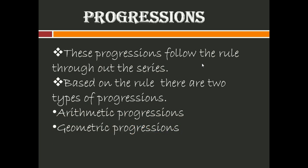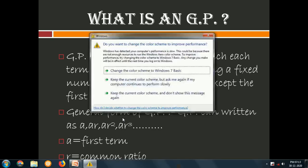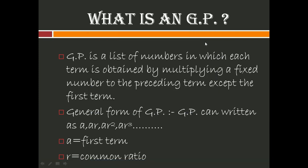Progression is our chapter. There are two types: arithmetic progression, obtained by adding a fixed quantity each time, and geometric progression. A GP is a list of numbers in which each term is obtained by multiplying a fixed number to the preceding term, except the first term. The general form is: a, ar¹, ar², ar³, and so on — where a is the first term and r is the common ratio.